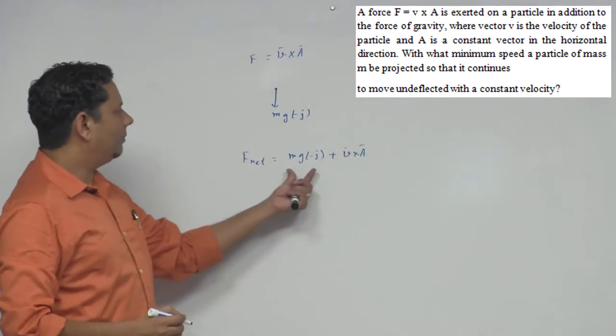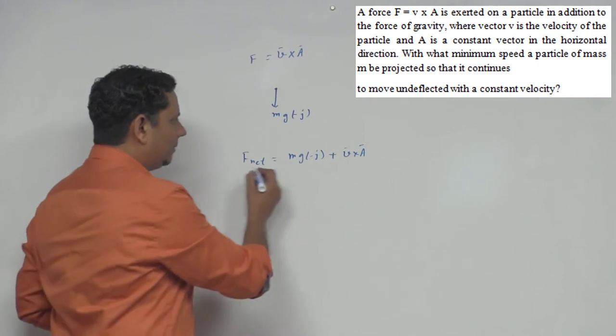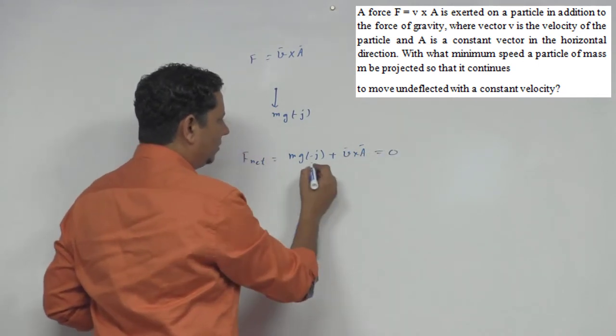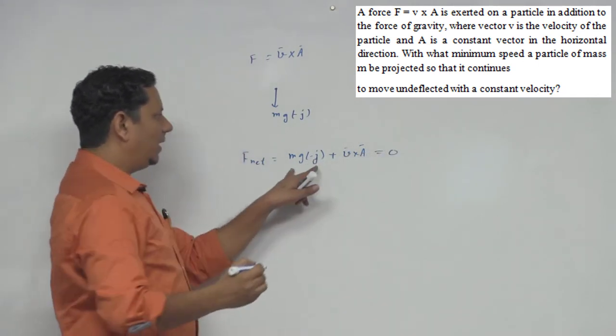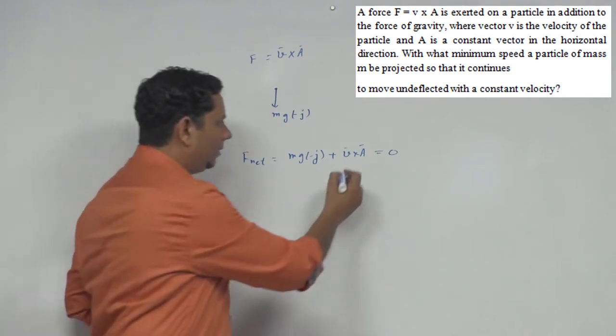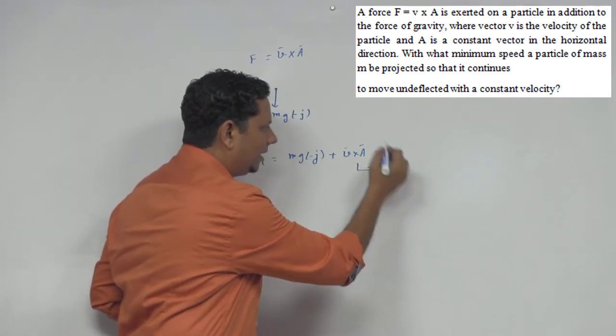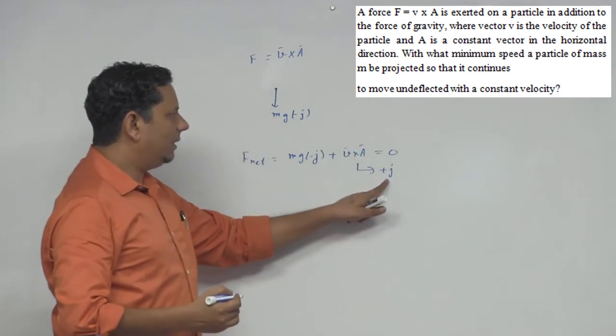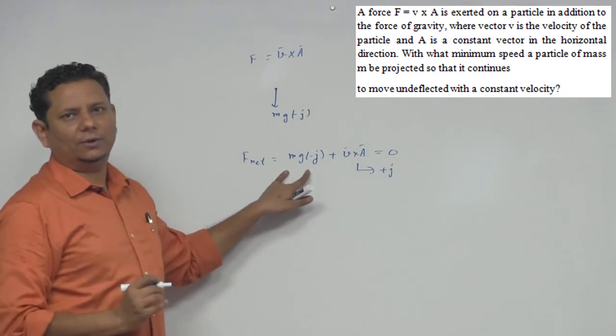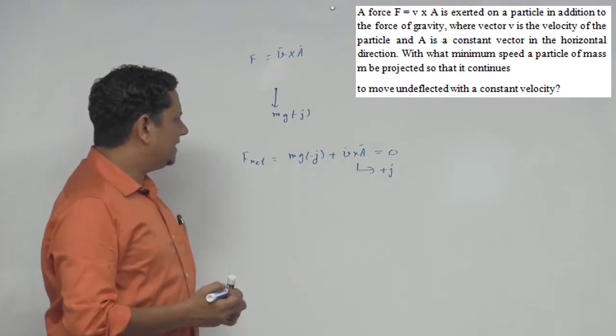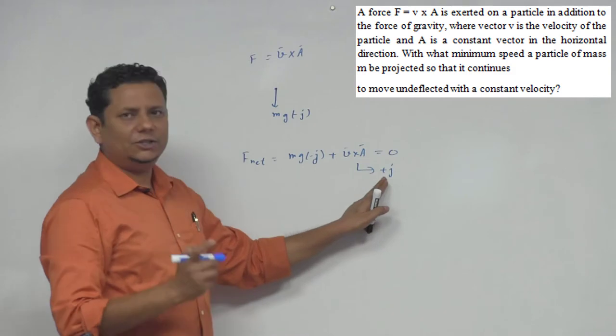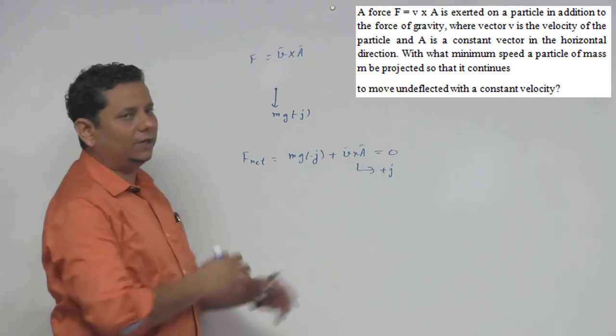This particle is undeflected, which means F_net should be equal to zero. This means that V cross A in the plus J cap direction must equal mg. So V cross A equals mg.